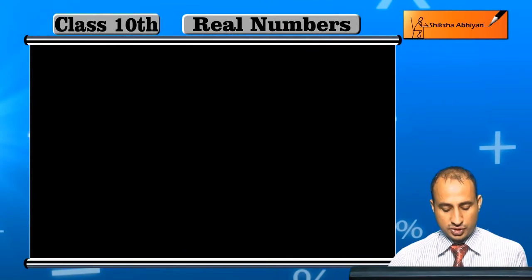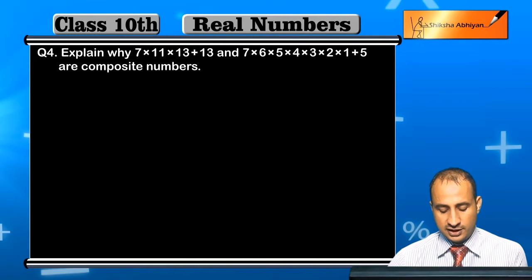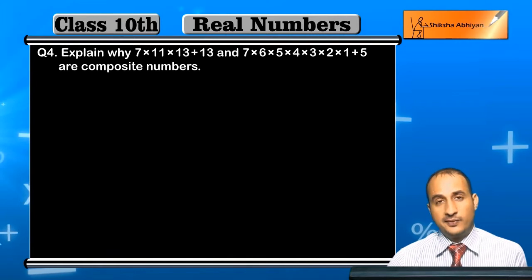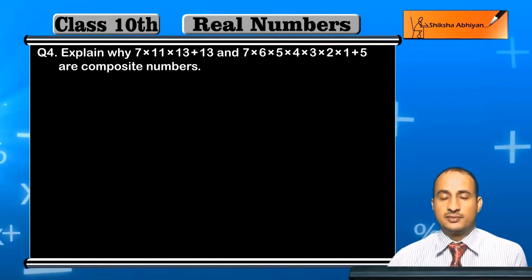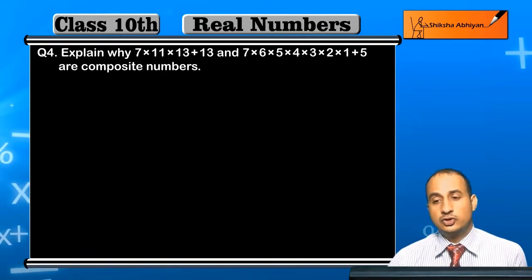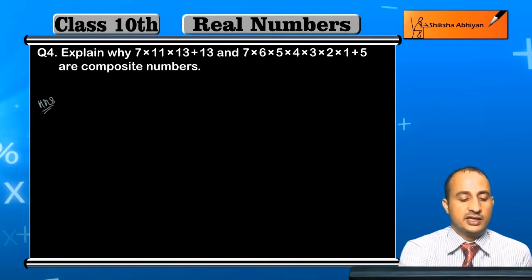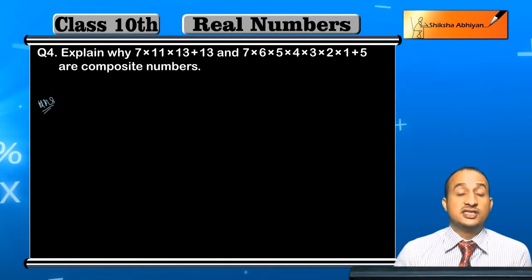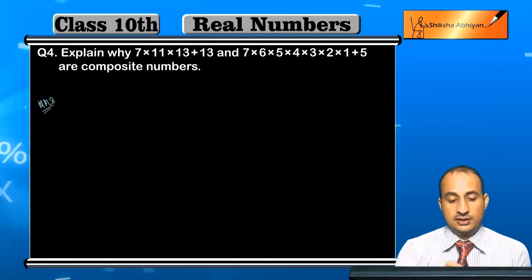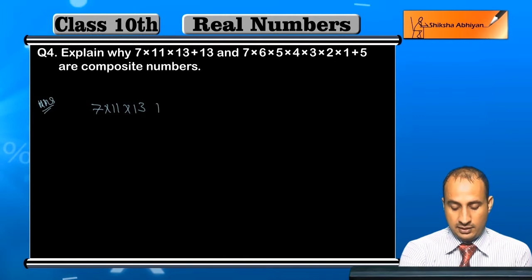Students, see question 4. Question 4 is: explain why 7 into 11 into 13 plus 13, and 7 into 6 into 5 into 4 into 3 into 2 into 1 plus 5 are composite numbers. We have given some numbers here and we will show that they are composite numbers. The first number we have given is 7 into 11 into 13 plus 13.